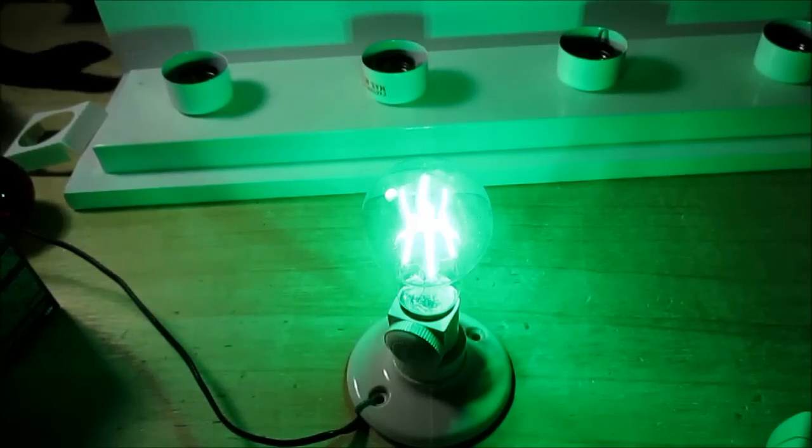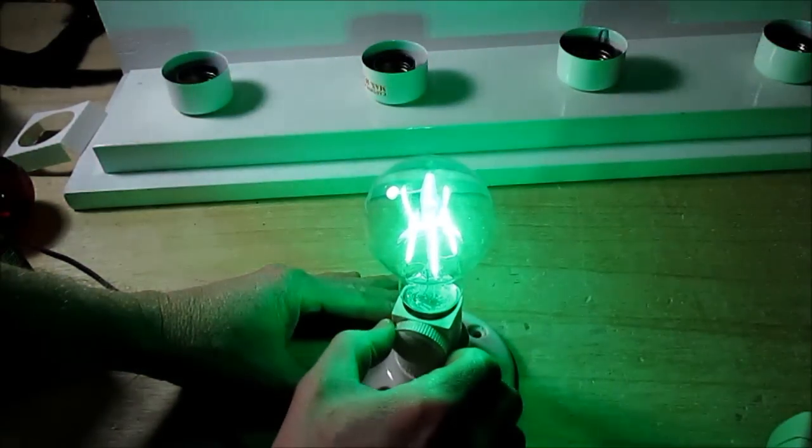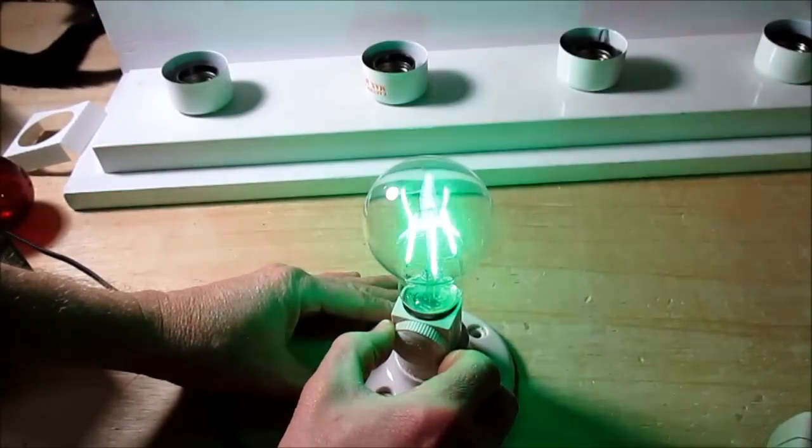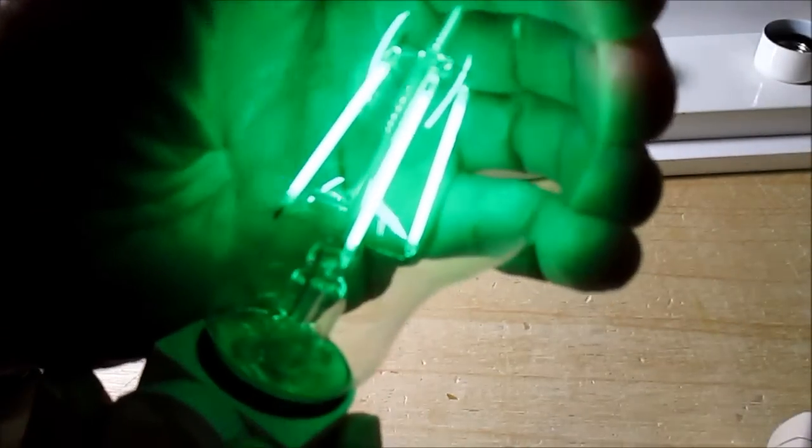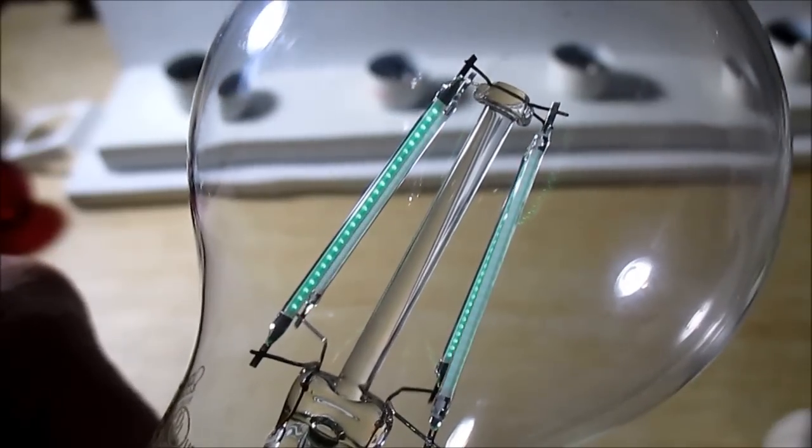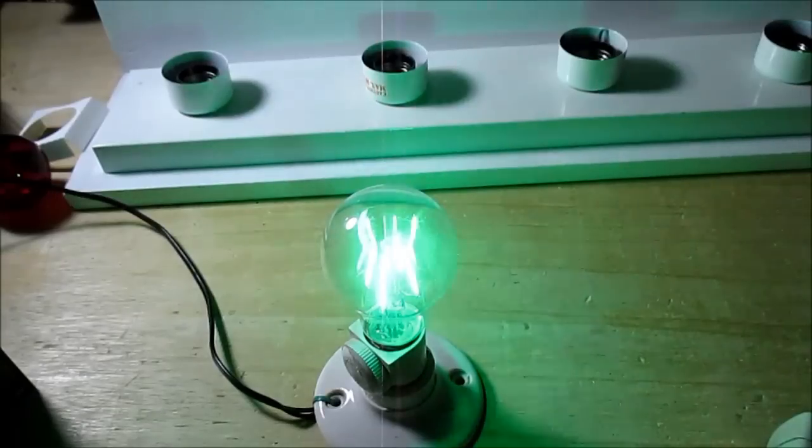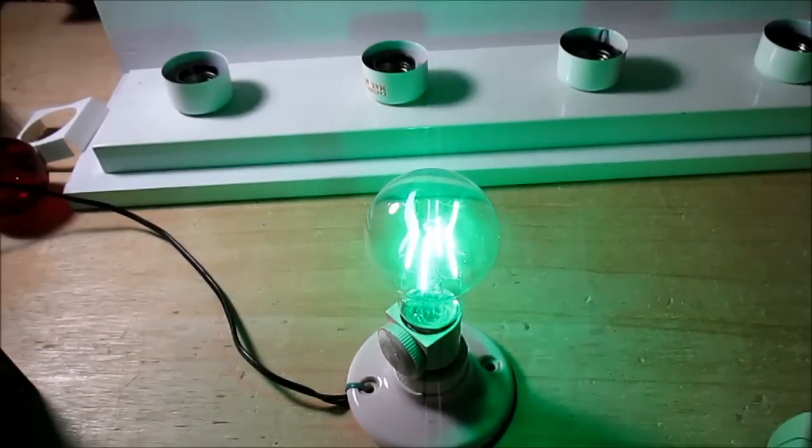And speaking of dimmability, they do dim quite nicely. In fact, you can bring it way low. And maybe we can get a look at these little LED chips inside there. There you can see the little points of green light. The green, blue, and ultraviolet generate the color right off the LED chips themselves, whereas the other ones have a phosphor coating over them.